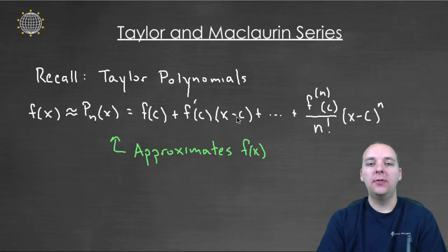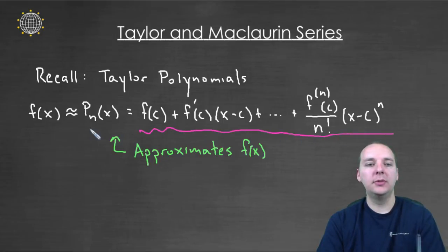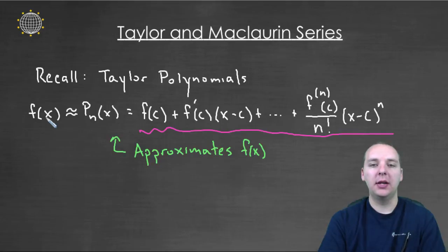So you know if you did five terms that would be more accurate than if you had only done four terms. And without going through a lot of the detail again, this was the pattern for the terms in a general Taylor polynomial. And so these guys approximated f.